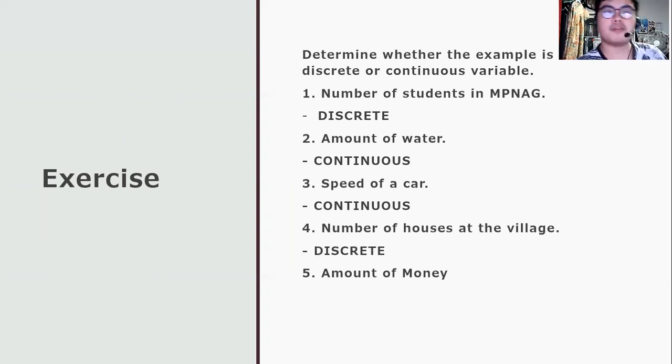When we say number of houses in the village, it is discrete because it's countable and it can be described through whole numbers. When we say amount of money, why is it continuous? Because it can be described with decimal or a fraction. Besides, the amount of money is not countable because it can reach an infinite value.